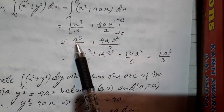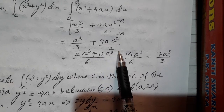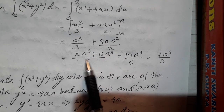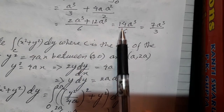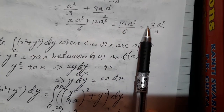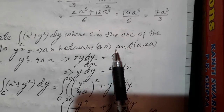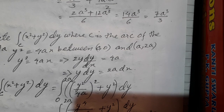So we get x cubed by 3 plus 4ax squared by 2, evaluated from 0 to 8. Putting the upper limit, we get 8 cubed by 3 plus 4a into 8 squared by 2. Taking the LCM, we get 2a cubed plus 12a cubed, giving us 14a cubed by 6, which equals 7a cubed by 3. That is the value of the integration of the function along the curve y squared equal to 4ax.